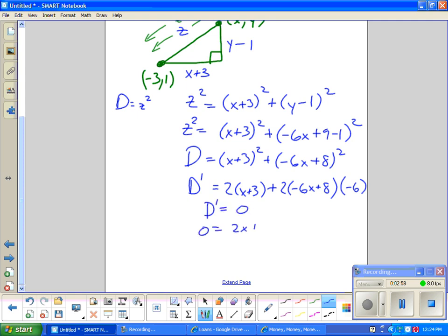So 0 equals 2x plus 6. This is negative 12. So how about plus 72x minus 96? I get 0 equals 74x minus 90. So x is 90 over 74 or 45 over 37.